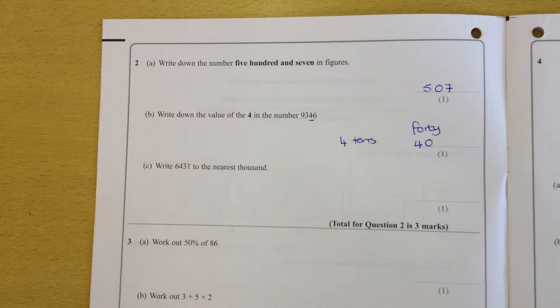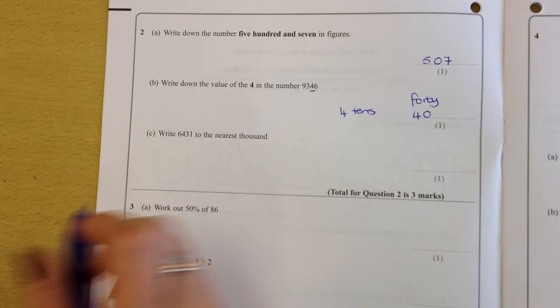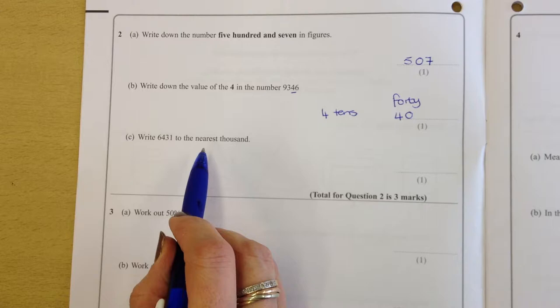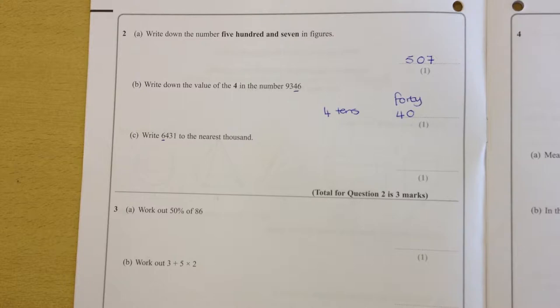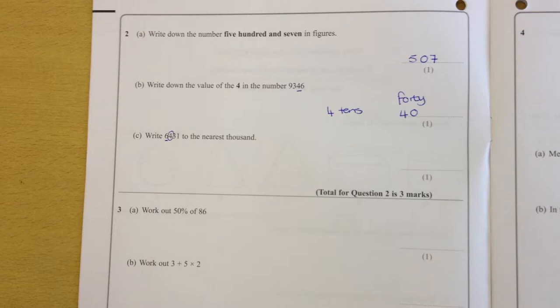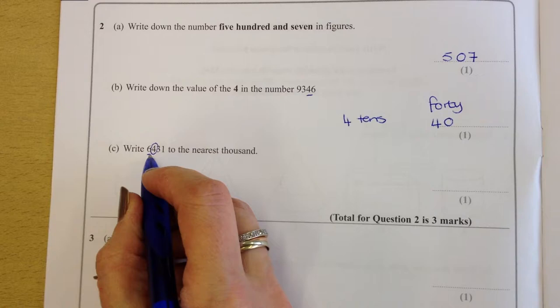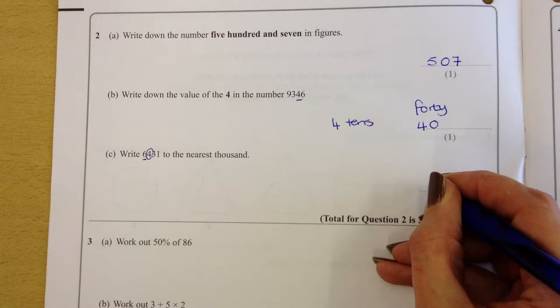OK, last one of 2 is 2C. Write 6,431 to the nearest 1,000. As you can tell, this is going to be a rounding question. So it's the nearest 1,000, so we're looking at this number here. This number here could change or it could stay the same. We always look at the one next to it, the 4 in this case, to see whether that's going to be rounding it up to 7,000 or keeping it to 6,000. OK, so as we can see, it's a 4. Anything 5 and over will go to 7,000. It's not 5, so it's 6,000.